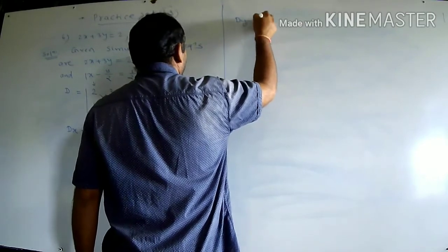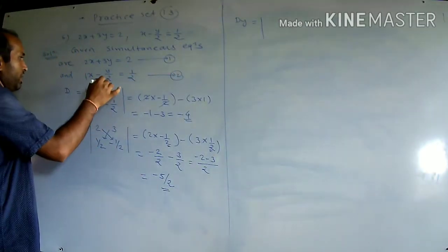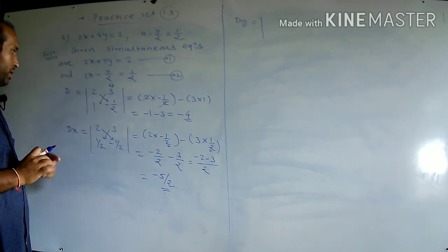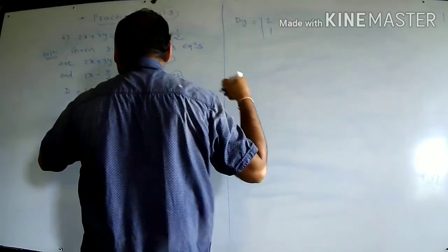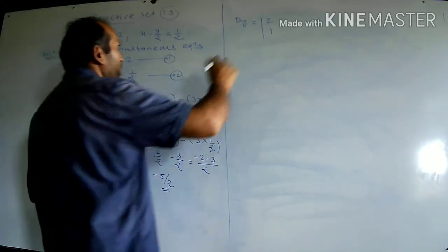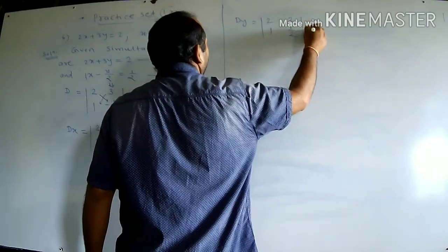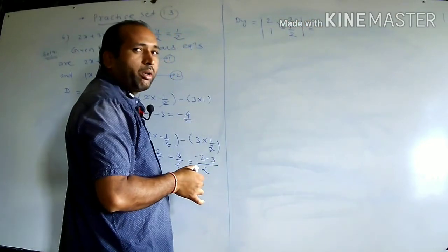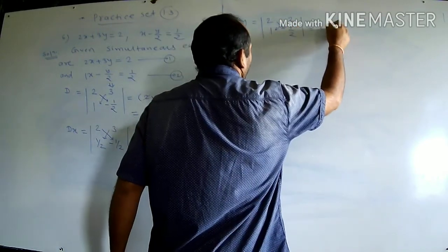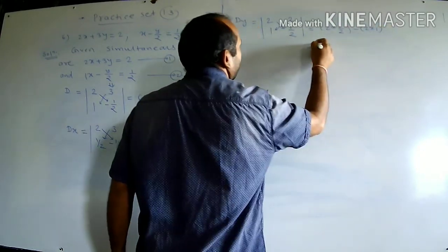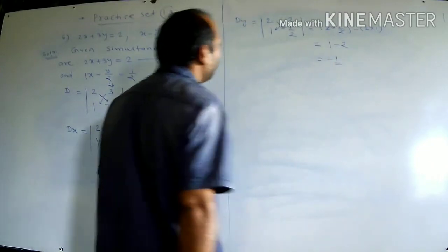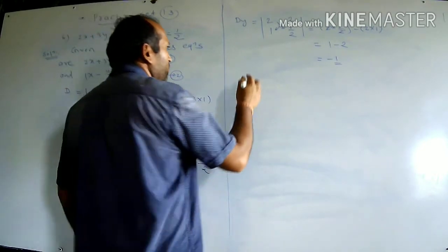For DY: first column 2, 1 remains as is; replace second column with constants 2, 1/2. Value: 2 into 1/2 minus 2 into 1. The 2 cancels: 1 minus 2 = minus 1. This is the value of DY.